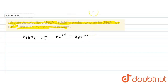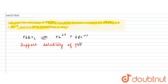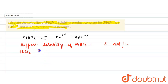Suppose that the solubility of PbBr₂ is equal to s moles per liter. It is given that PbBr₂ is 80% dissociated.